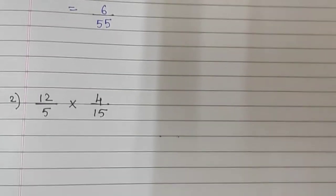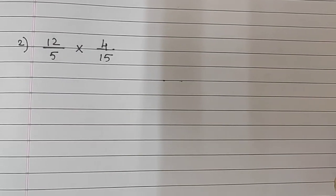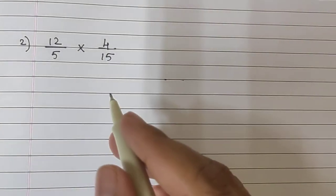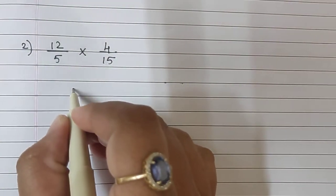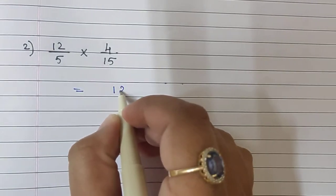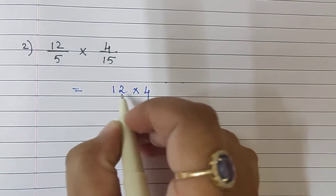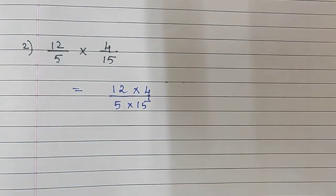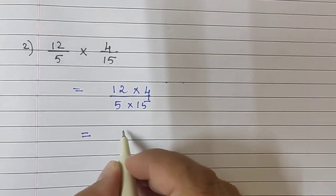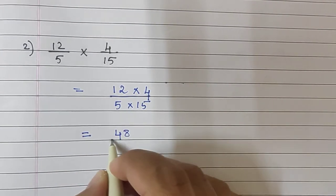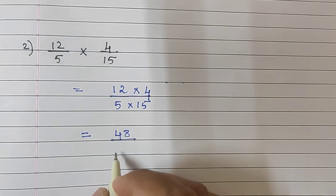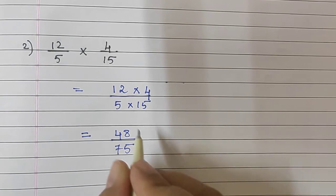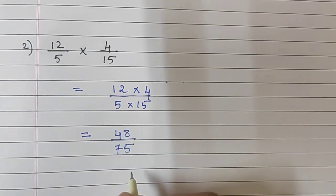Moving to the next sum: 12 upon 5 multiplied by 4 upon 15. We write 12 multiplied by 4 upon 5 multiplied by 15. So 12 fours are 48, and 5 into 15 is 75. Our answer is 48 upon 75.